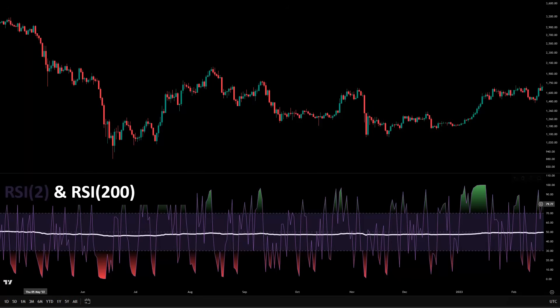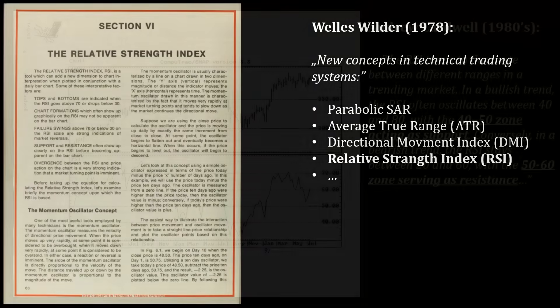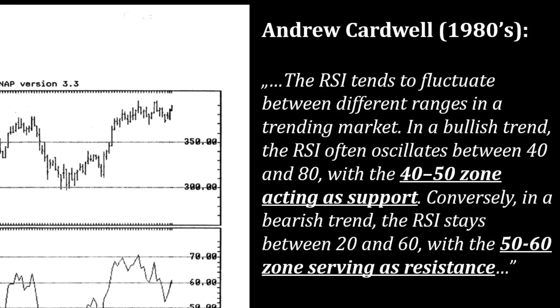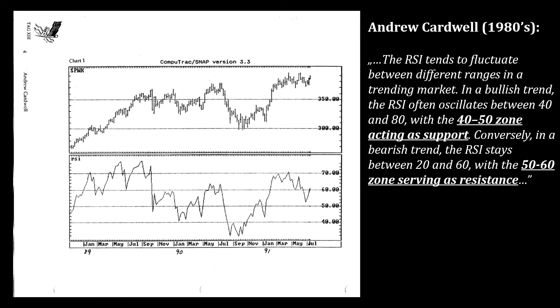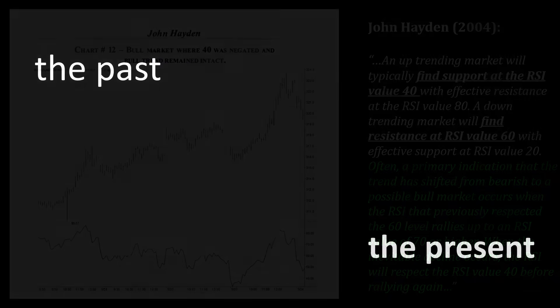If a level doesn't mean the same thing across lookbacks, it simply cannot be a universal rule. Now, some background — because this isn't me saying old bad, new good. Wells Wilder, who created RSI, already noticed that RSI tends to find support and resistance before price does. Andrew Cardwell saw that RSI behaves differently in uptrends versus downtrends — in uptrends it tends to live in the 40–80 area, and in downtrends more in the 20–60 area. Connie Brown formalized those ranges. Later, John Hayden used the 40–60 area as an early tell that a trend may be shifting. So for decades, serious RSI work has quietly moved away from always 70, always 30, and towards: the level depends on the context.